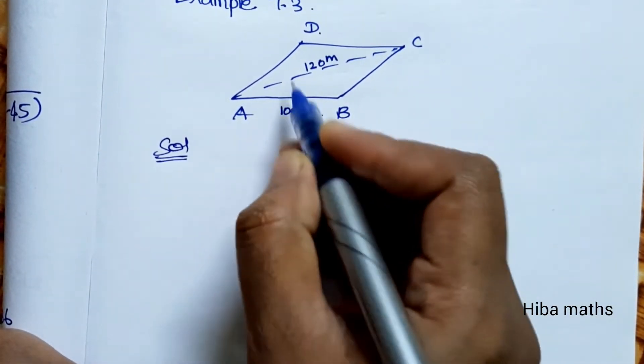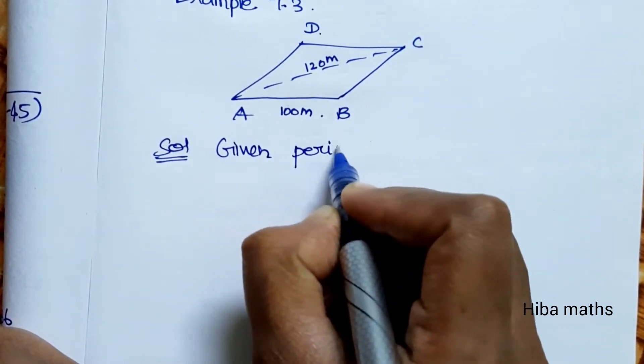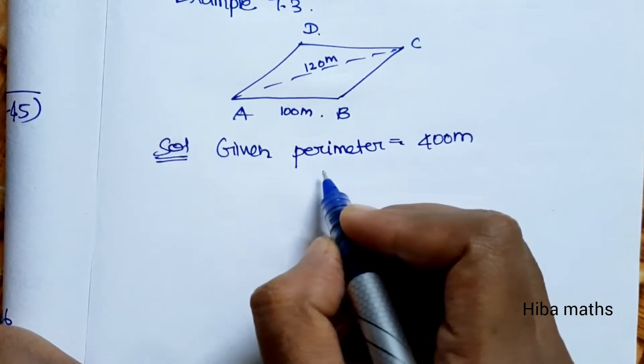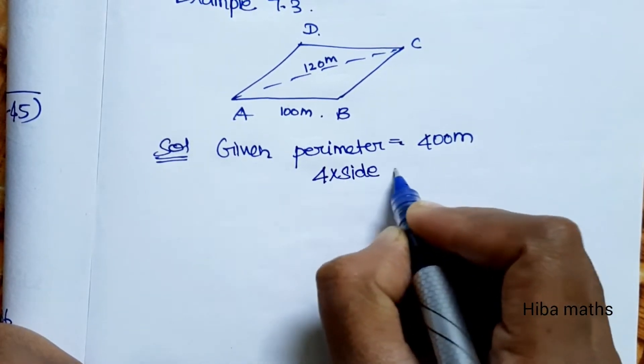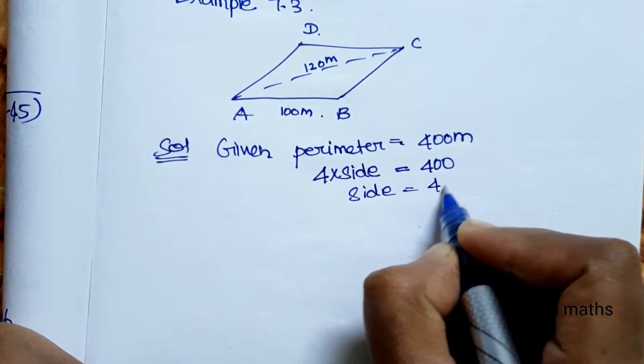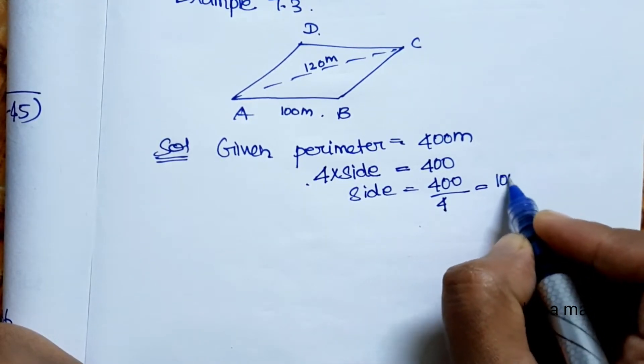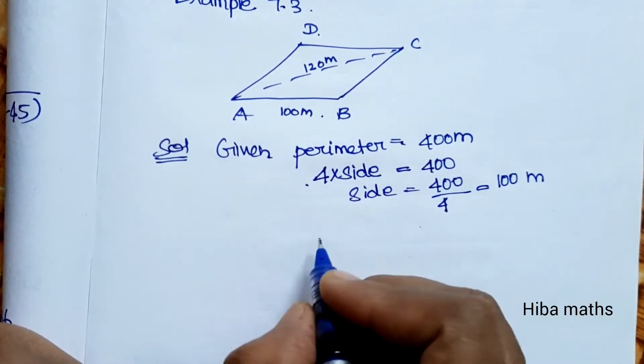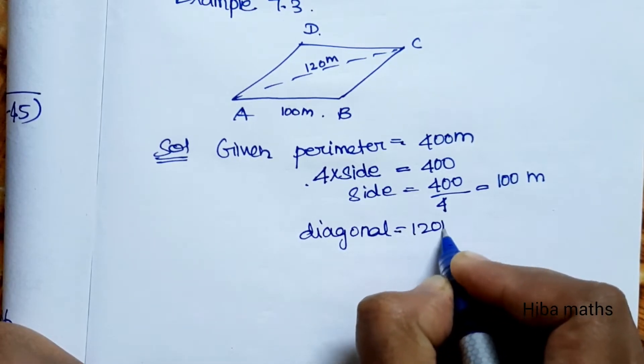In the solution, the perimeter of the field is 400 meters. So the side is equal to 400 divided by 4, which equals 100 meters. Each side of the rhombus is 100 meters. And one diagonal is 120 meters.